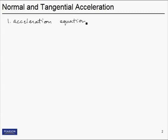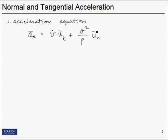Step one is to write the acceleration equation. In normal and tangential components, the acceleration at point A is written as a tangential component and a normal component. The notation we use is: the tangential part is V-dot times a unit vector in the tangential direction, and the normal part is V squared over rho times a unit vector in the normal direction. Here V is the speed, rho is the radius of curvature, and V-dot is the rate of change of speed.